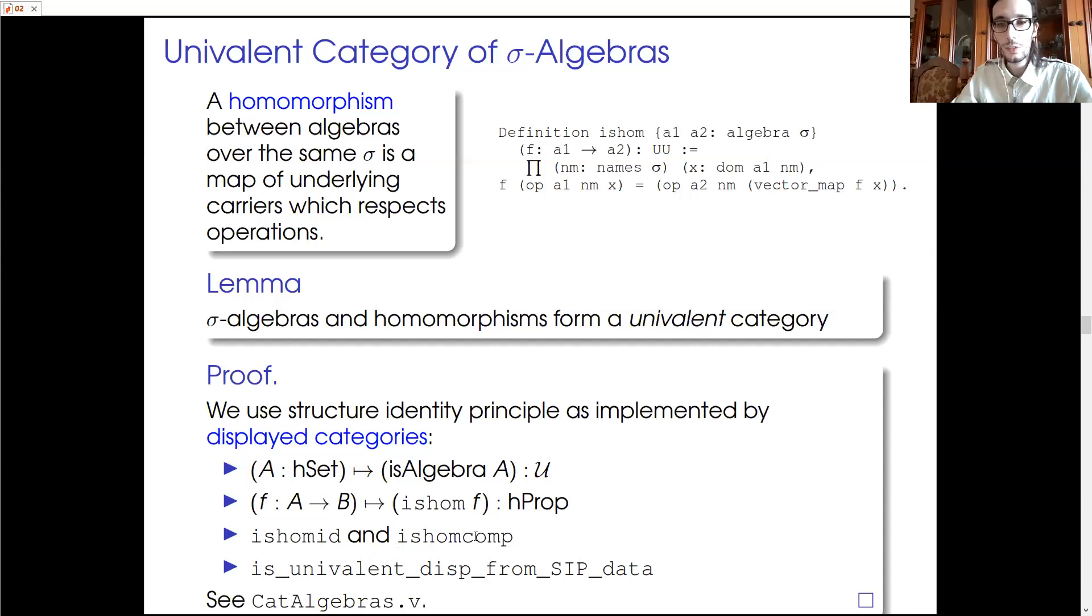Then we prove that the identity function is in fact a homomorphism on algebra and the property is closed under composition of functions. And finally, to prove displayed univalence, we use this proof term in UniMath. And that simplifies our goal in proving that is_algebra lives in hSet and that any two assignments of operations to symbols are equal whenever the identity map is a homomorphism with respect to these assignments.